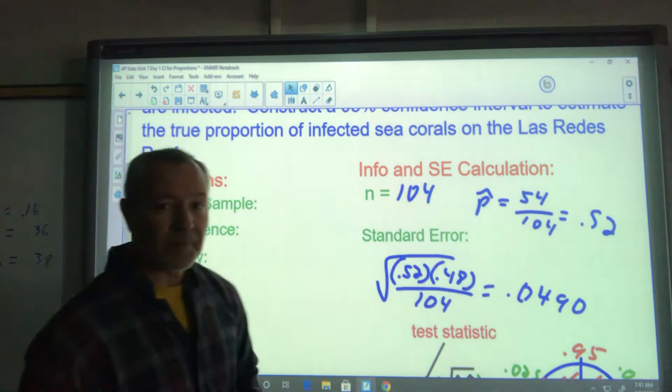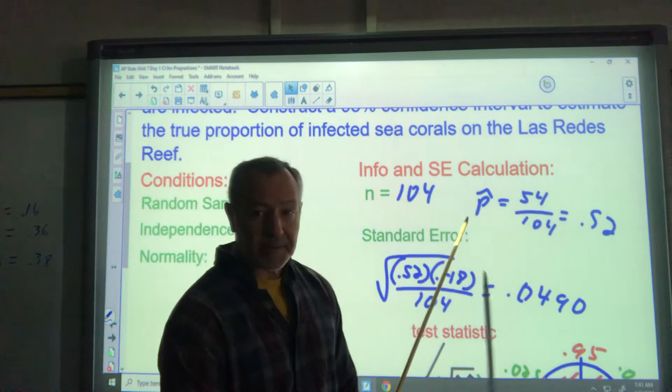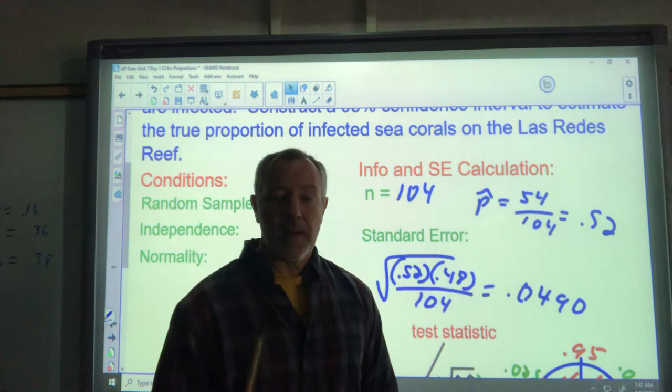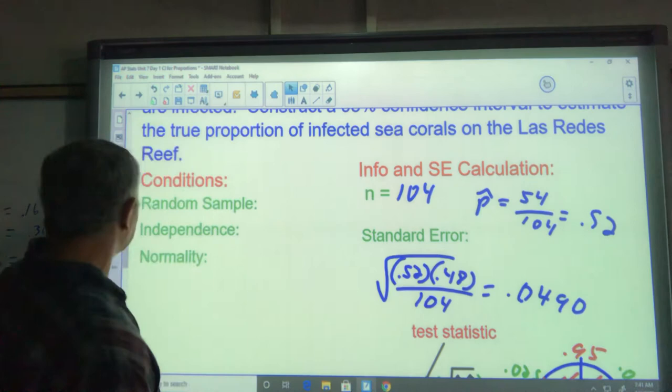Our information we gather from the problem, very simple, actually, and very little. Our sample size is 104. And our proportion of successes that we got, it's not a good thing to have infected coral, but in this case, that's what we're looking for, so we call it a success. P hat would be 54 out of 104, and I rounded that off to 0.52 for our purposes. I would keep four places normally.